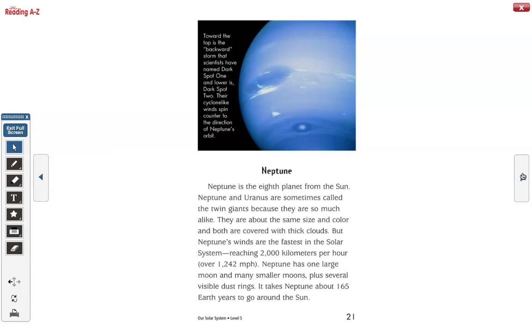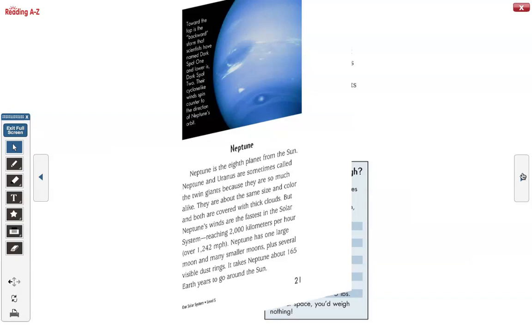Neptune is the eighth planet from the sun. Neptune and Uranus are sometimes called the twin giants because they are so much alike. They are about the same size and color and both are covered with thick clouds. But Neptune's winds are the fastest in the solar system reaching 2,000 kilometers per hour or over 1,242 miles per hour. Neptune has one large moon and many smaller moons plus several visible dust rings. It takes Neptune about 165 Earth years to go around the sun.